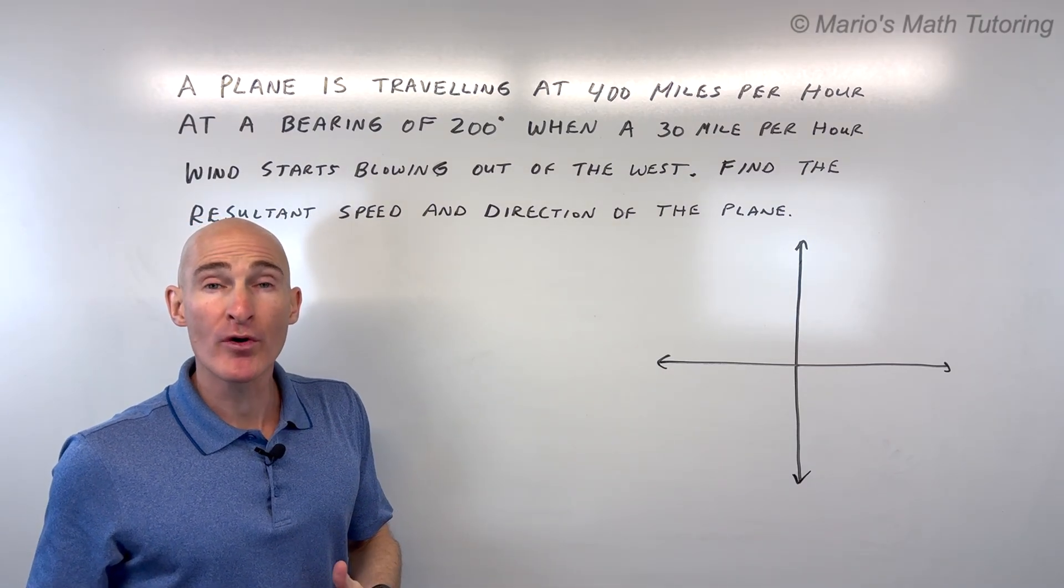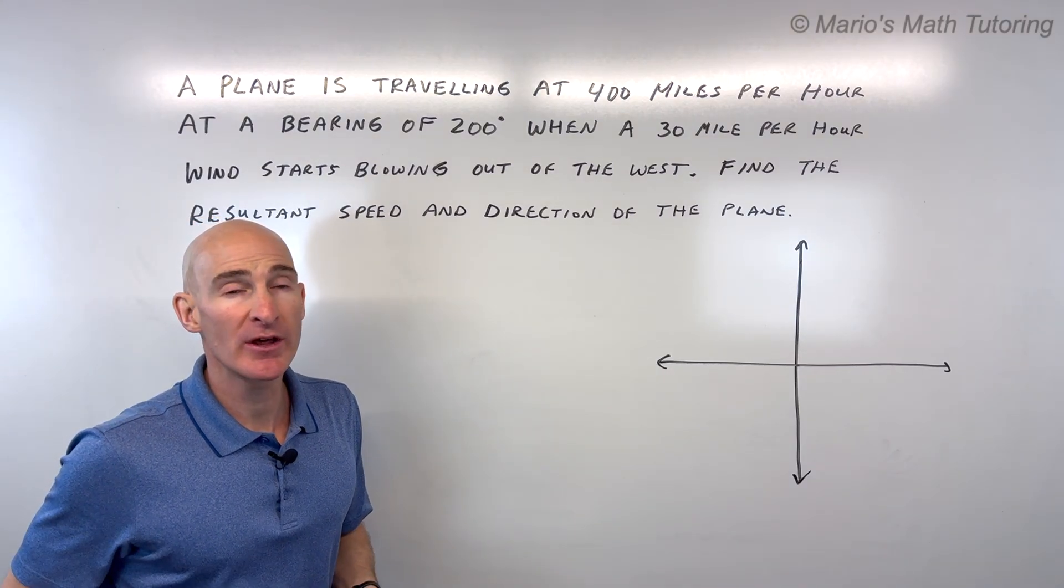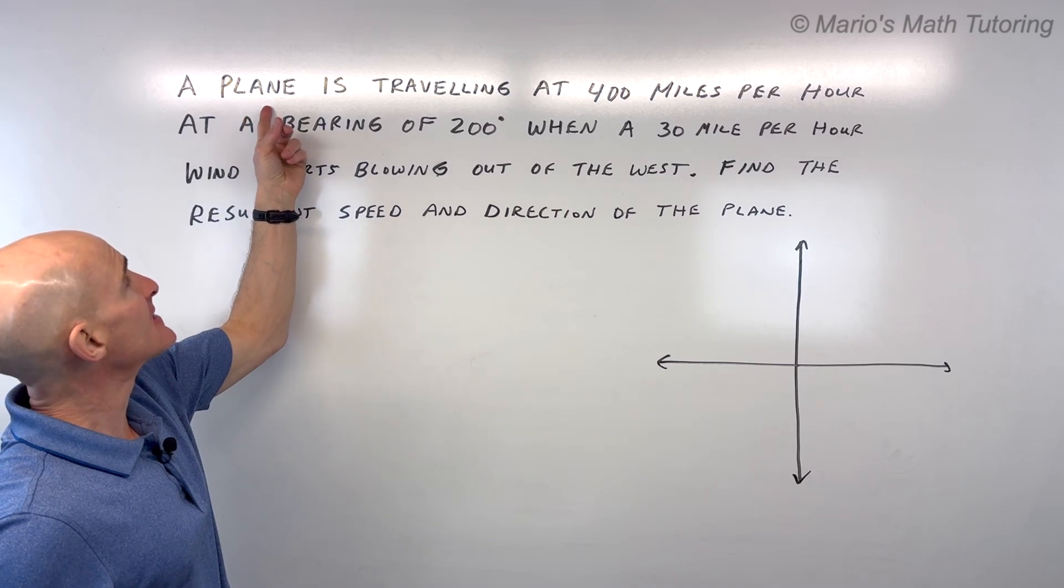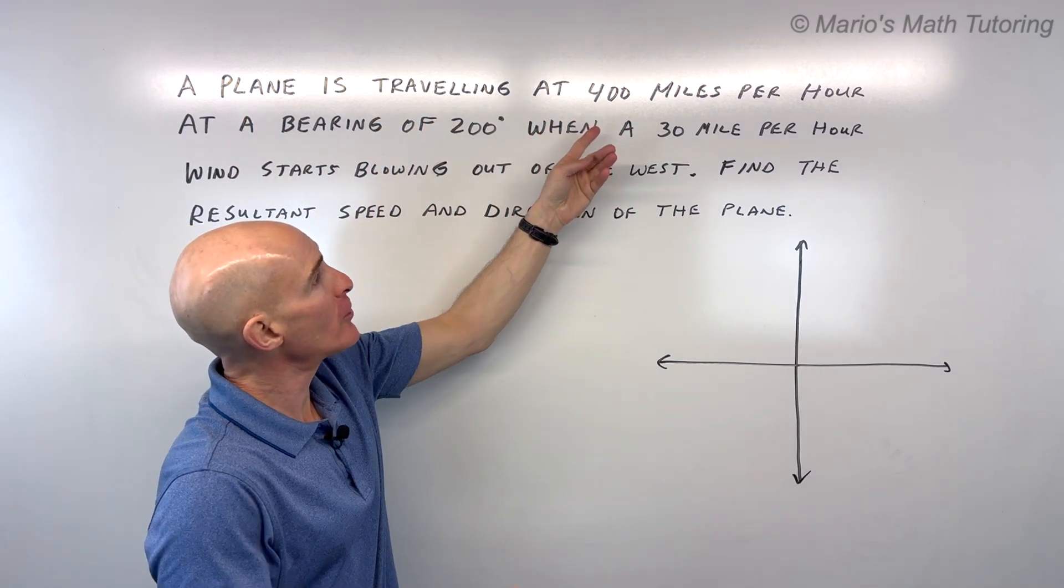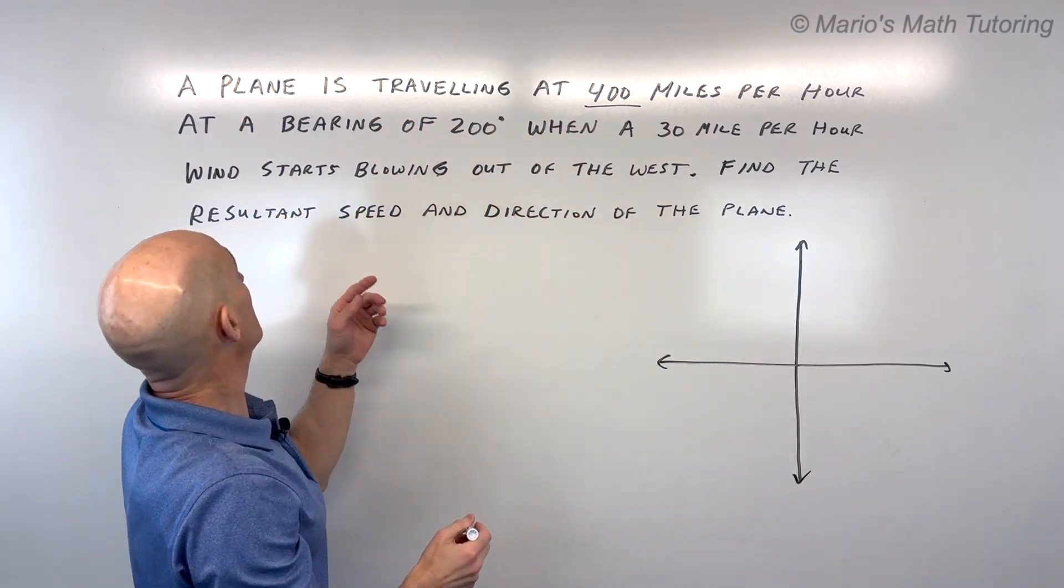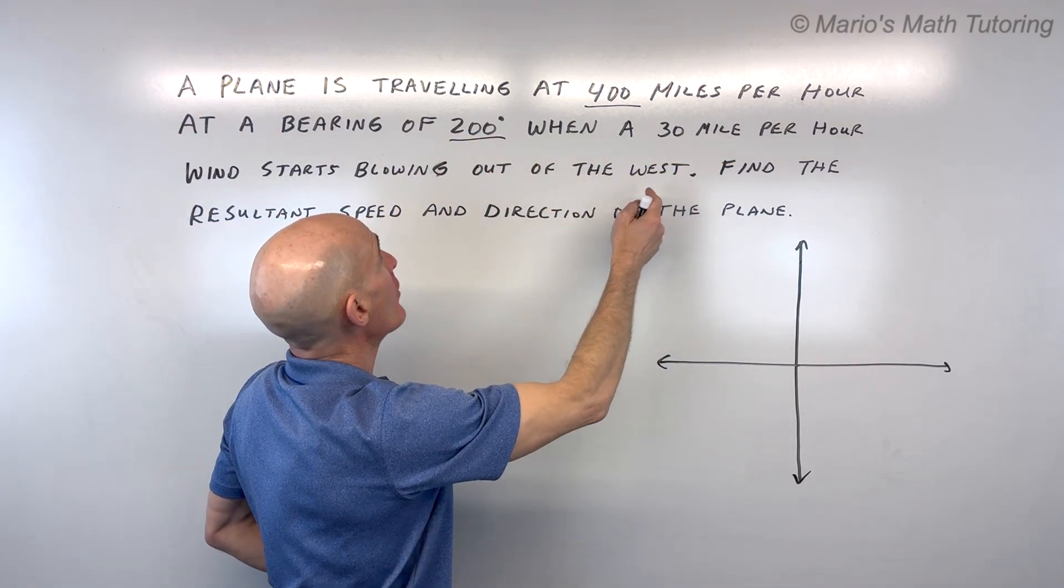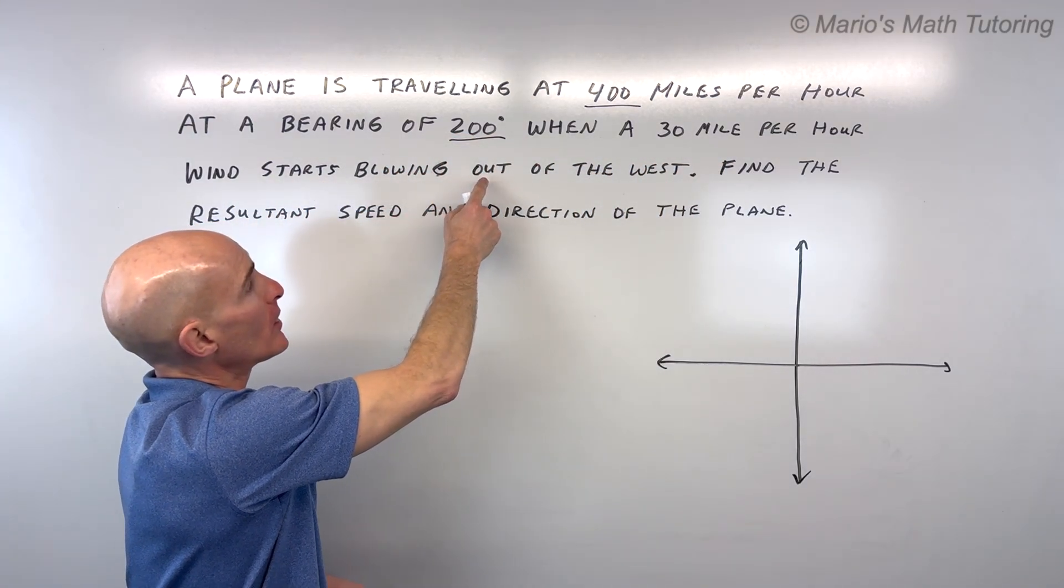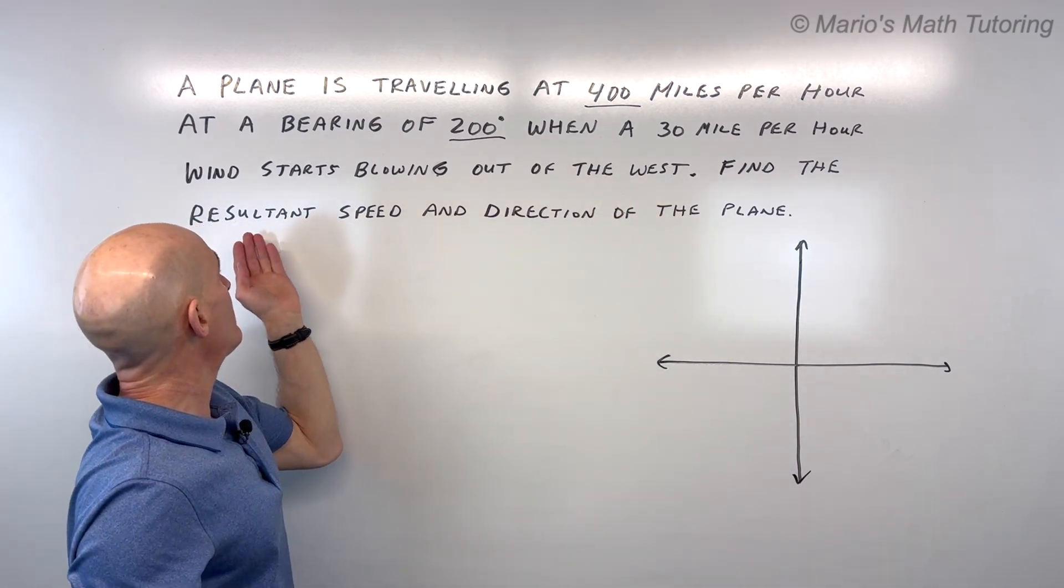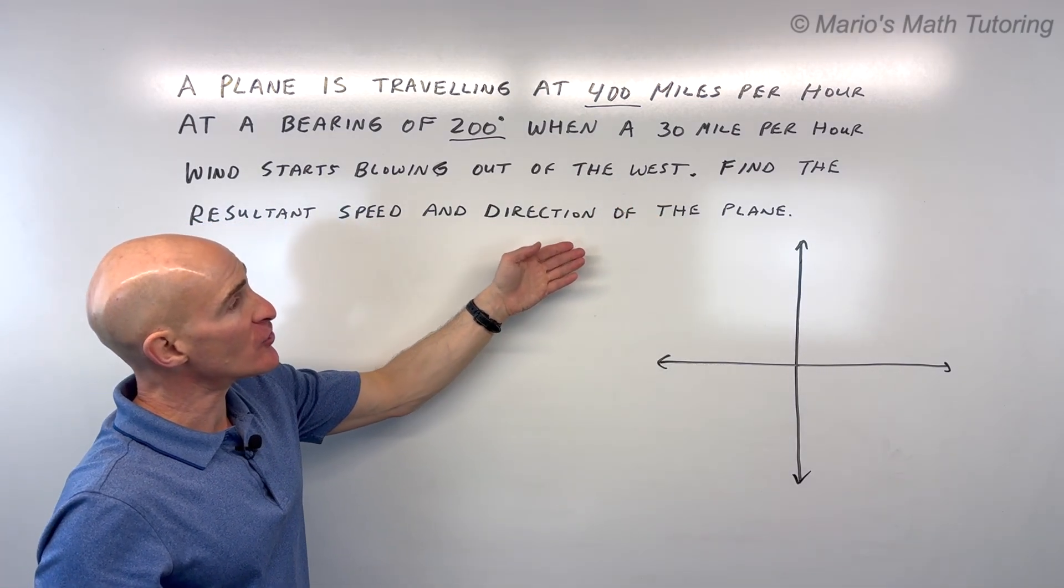In this video, we're going to look at a word problem involving vectors. So let's go ahead and read the story problem here. It says, a plane is traveling at 400 miles per hour at a bearing of 200 degrees. When a 30 mile per hour wind starts blowing out of the west, find the resultant speed and direction of the plane.